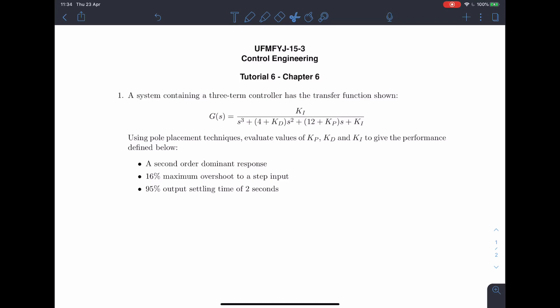We have to use pole placement techniques to work out what these values are. We are given some specs for the control system. It says that the response needs to be second order dominant, 60% maximum overshoot to a step input and with a 95% output settling of 2 seconds.